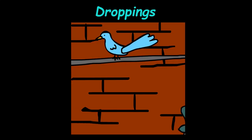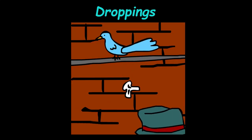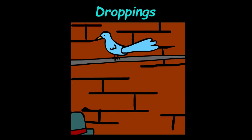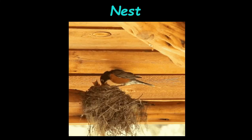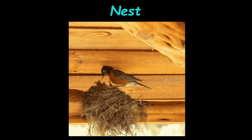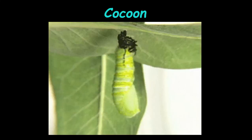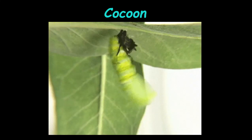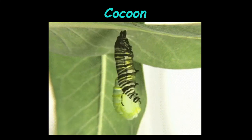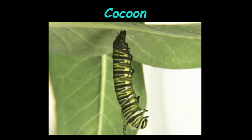Or if you see droppings, this is a sign of the presence of a bird. Or if you see a nest, this is a sign of the presence of a bird. Or if you see a cocoon, this is a sign of the presence of an insect.